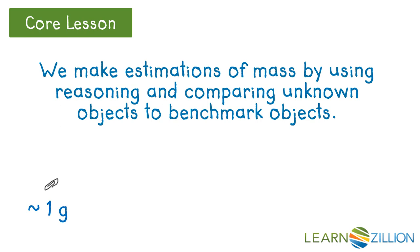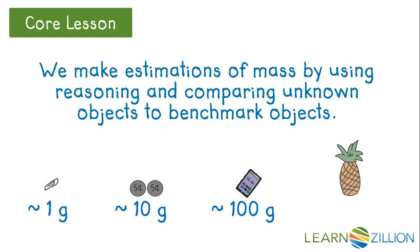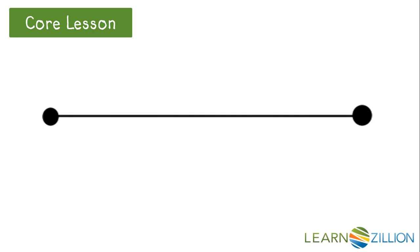A paperclip has a mass of about 1 gram. Two nickels have a mass of about 10 grams. A smartphone has a mass of about 100 grams. And a pineapple has a mass of about 1,000 grams. We know 1,000 grams is also equal to 1 kilogram, so let's use that instead.